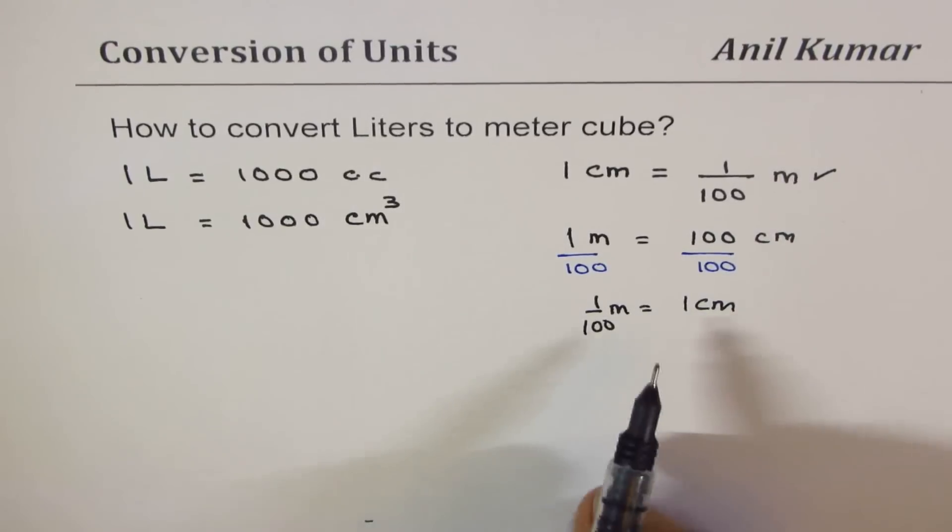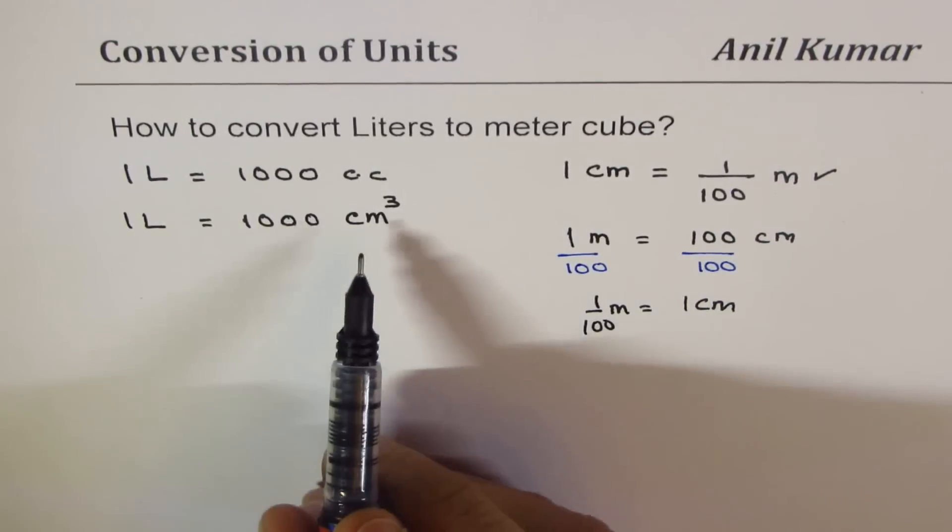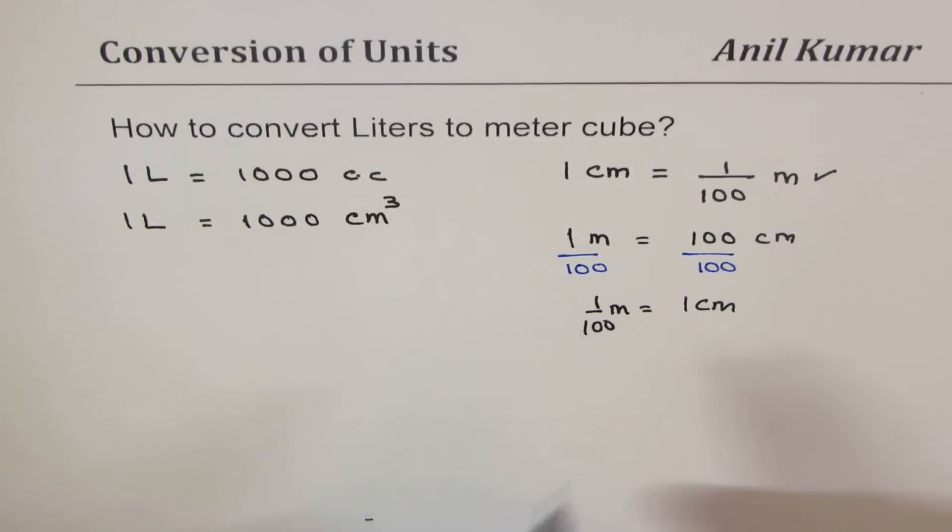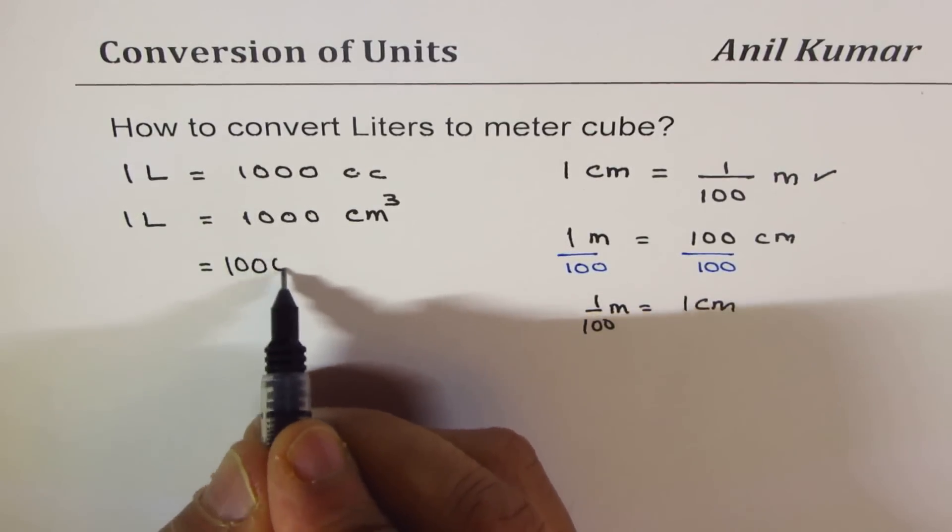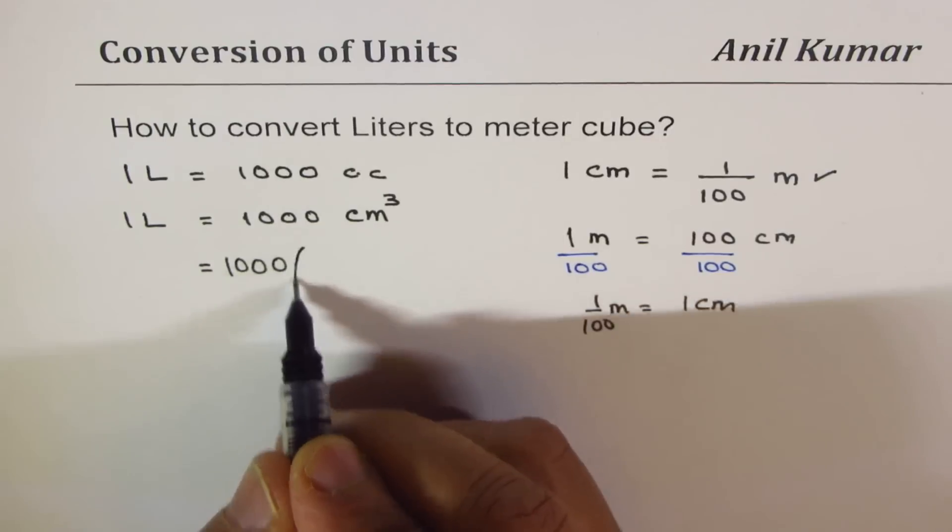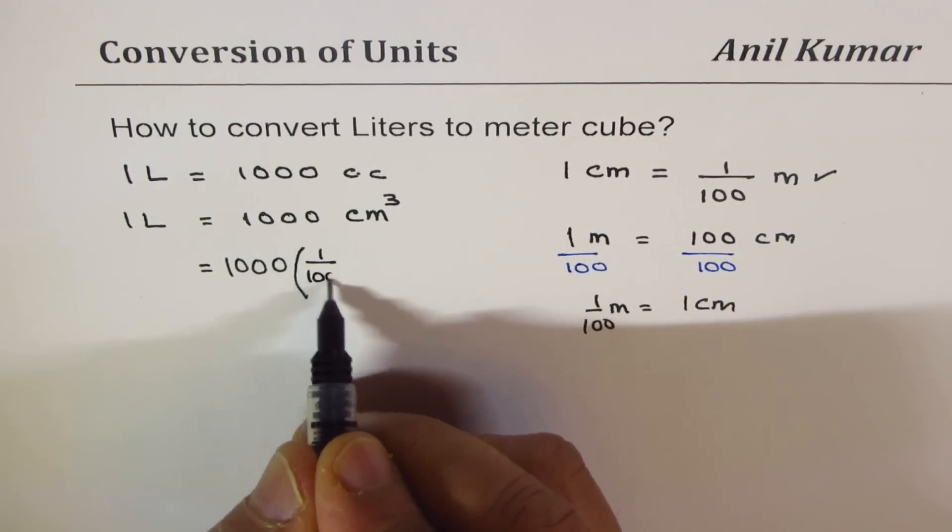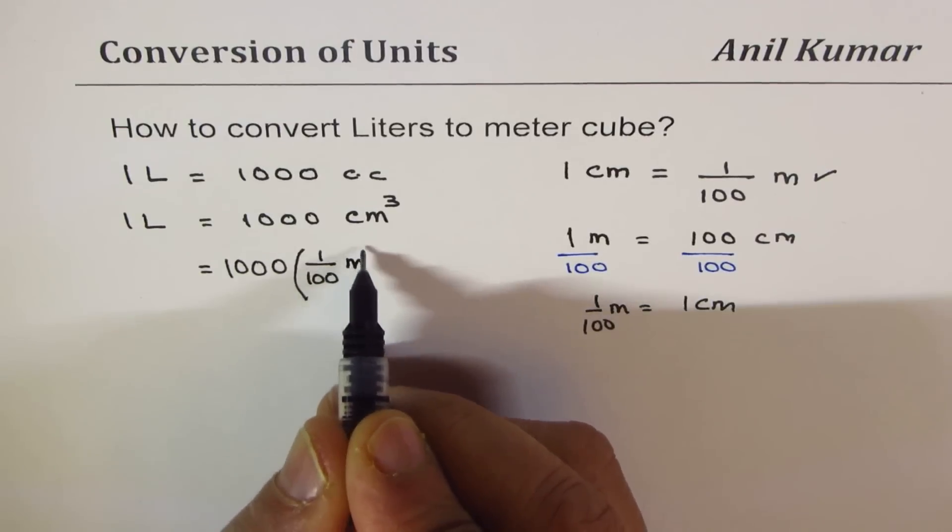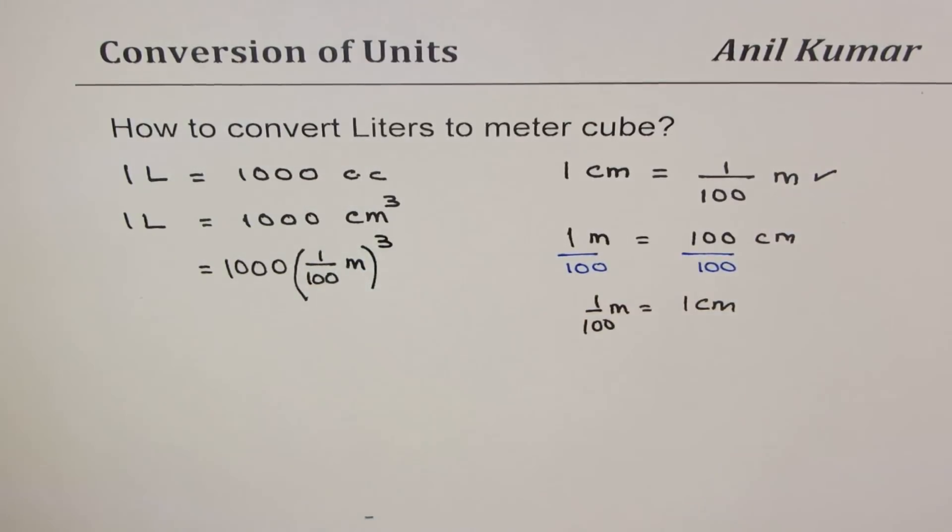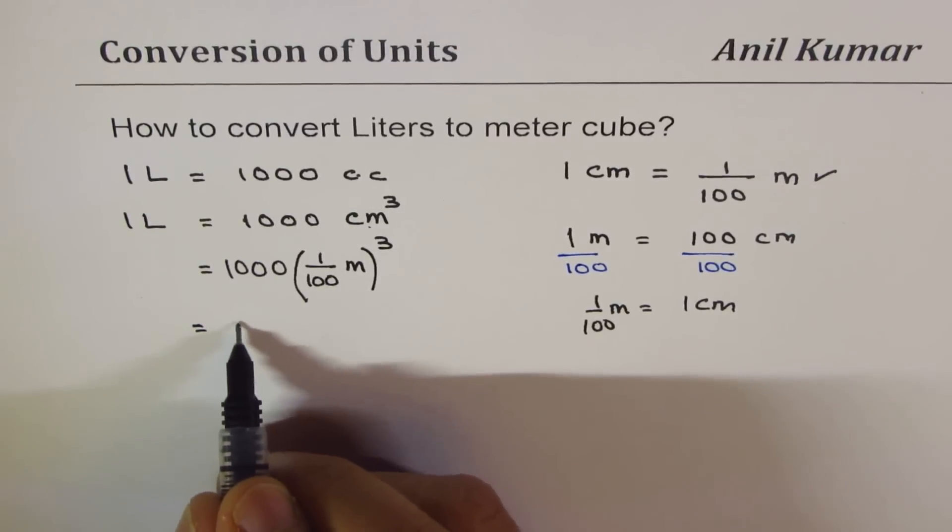What I will do here is replace centimeter by one over hundred meter to get our conversion. We have one thousand times, and instead of centimeters I'll write one over hundred meters cubed. So instead of centimeter, I wrote the conversion factor one over hundred.